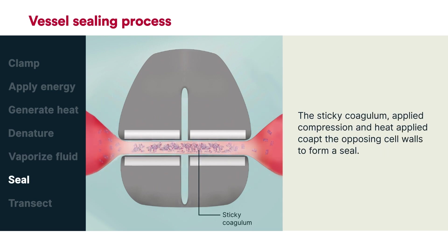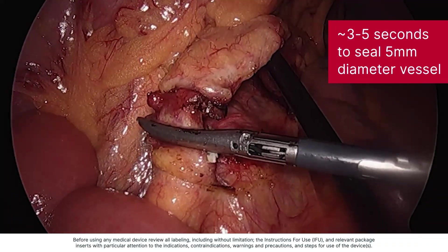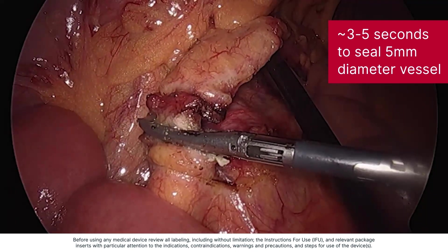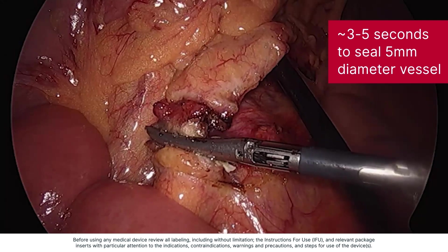The sticky coagulum, applied compression, and heat coopt the opposing cell walls to form a seal. With many advanced bipolar systems, an audible tone will be heard at the end of the sealing cycle. This notifies the surgeon to stop delivering energy. Then the surgeon can transect the tissue with the integrated knife blade if they choose to do so. In general, most advanced bipolar systems take 3 to 5 seconds to seal a vessel approximately 5 millimeters in diameter, and longer with larger vessels, as is shown in the laparoscopic video.